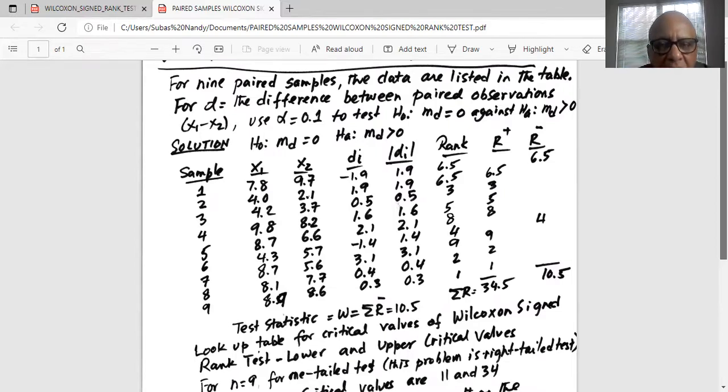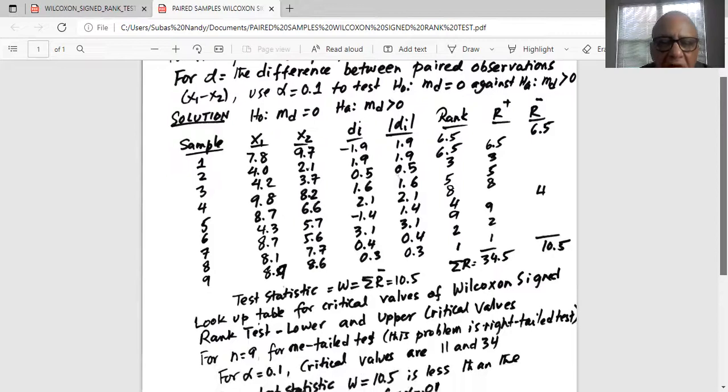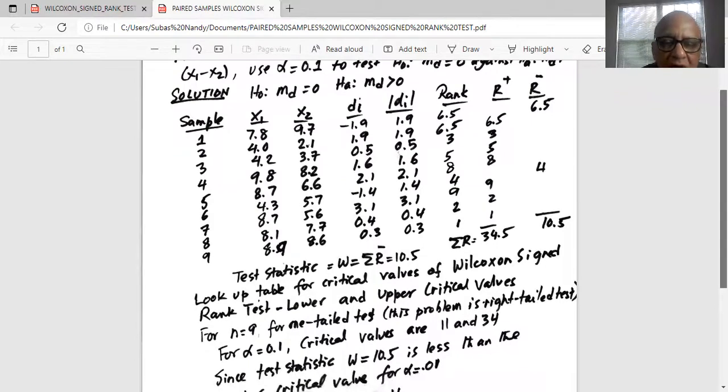Then we take the ranks of all the plus differences, positive differences, and their sum is 34.5. In Wilcoxon signed rank test, test statistic w is always the lowest sum, lowest rank sum, in this case 10.5.